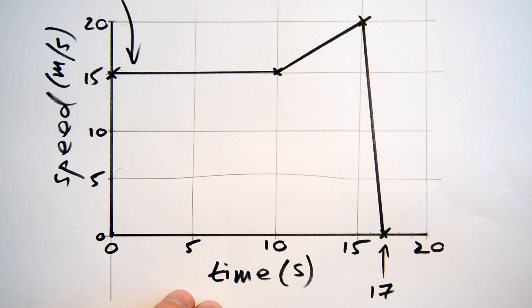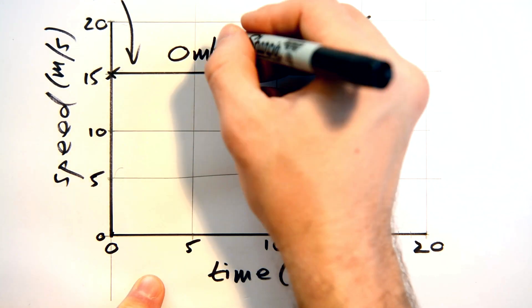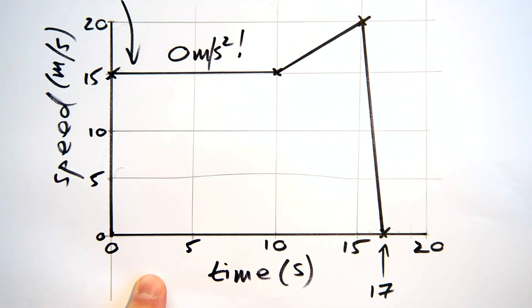Let's see how you got on. Of course, while Bob's travelling at a steady speed, his acceleration is zero metres per second squared. Why? Because his change in speed is zero. He's not getting any faster, he's not getting any slower.